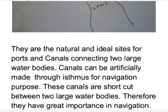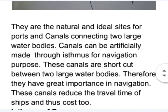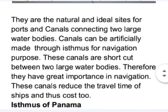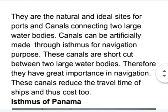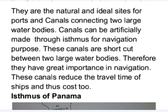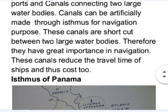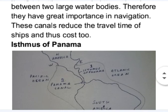Isthmuses are the natural and ideal sites for ports and canals connecting two larger water bodies. Canals can be artificially made through an isthmus for navigation purposes. These canals act as shortcuts between two large water bodies and therefore have great importance in navigation, reducing the travel time of ships and thus costs too.